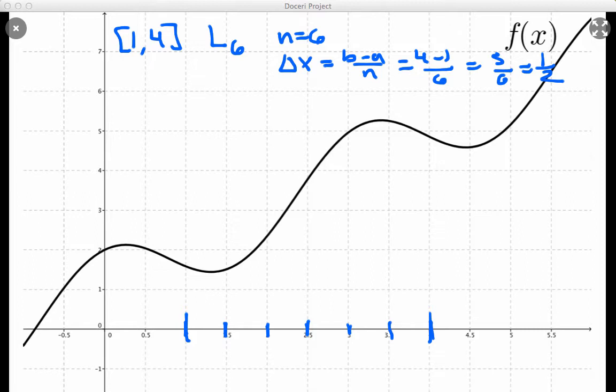So each of these rectangles that I'm going to eventually construct here has a width of 1 half. Now let's go find the left-hand endpoints. There's going to be 6 left-hand endpoints, so let me just put dots where they are. Here's the first one, the second, third, fourth, fifth, sixth.